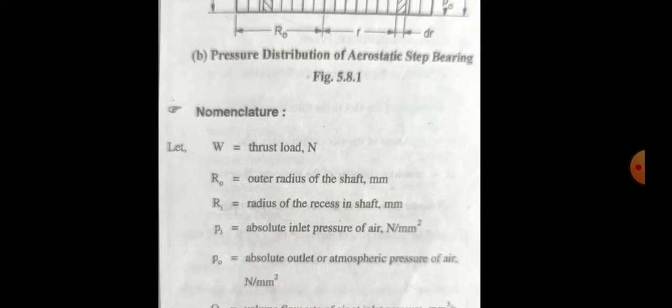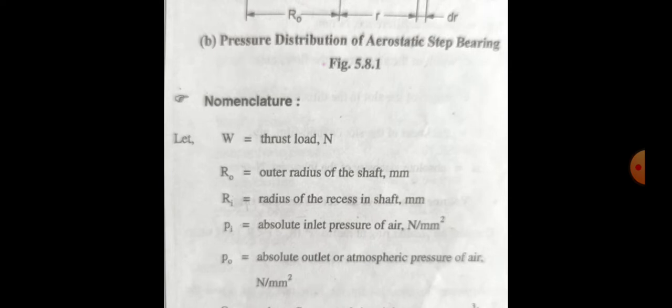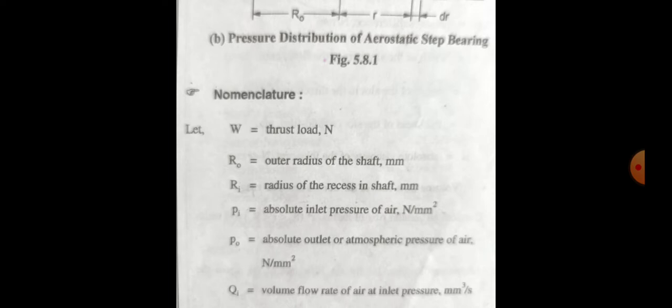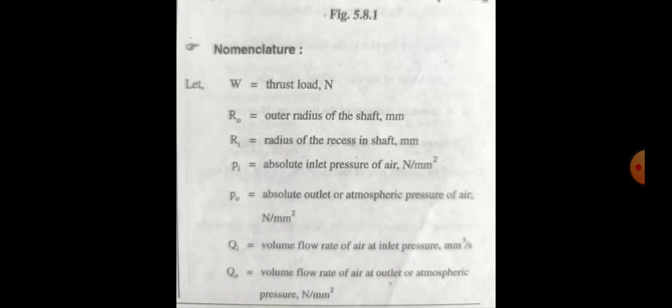The pressure is supplied between the two surfaces. The nomenclature is as follows: W is the thrust load in newtons; ro is the outer radius of the shaft; ri is the inner radius; pi is the absolute inlet pressure of the air in N/mm²; po is the absolute outlet pressure; qi is the volume flow rate at the inlet; and qo is the volume flow rate at the outlet to the atmosphere.